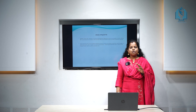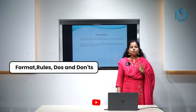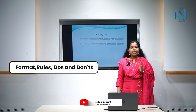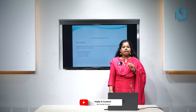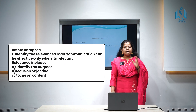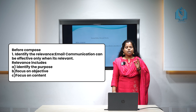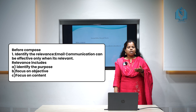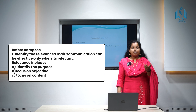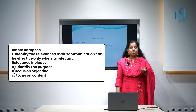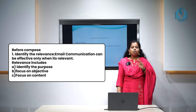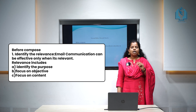We are going to look at the major formats, rules, do's and don'ts regarding the preparation of an email. First of all, when preparing an email, identify the relevance of the email. The relevance consists of majorly three elements: purpose, objectives, and content of the email. The objectives may differ — sometimes we draft an email to deliver information, to convey an instruction, or to induce or persuade people. So first of all, identify what are the objective, purpose, and content of the email.